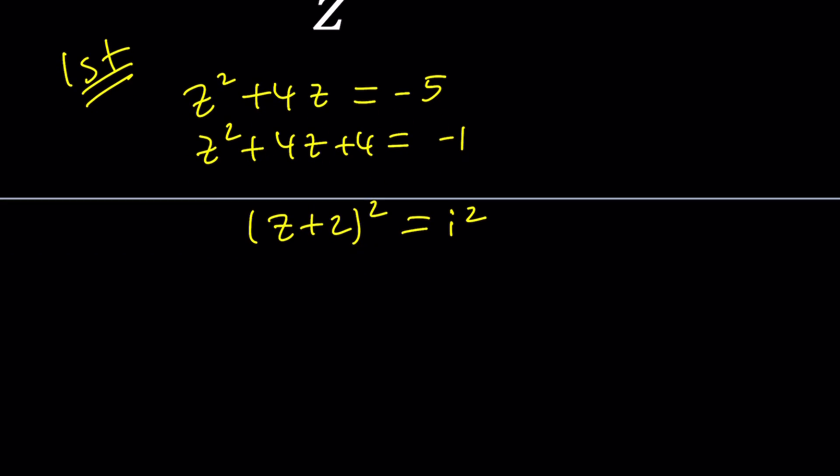Taking the square root, you're going to get two solutions. z plus 2 can be written as plus or minus i, and then z from here is going to be negative 2 plus or minus i.